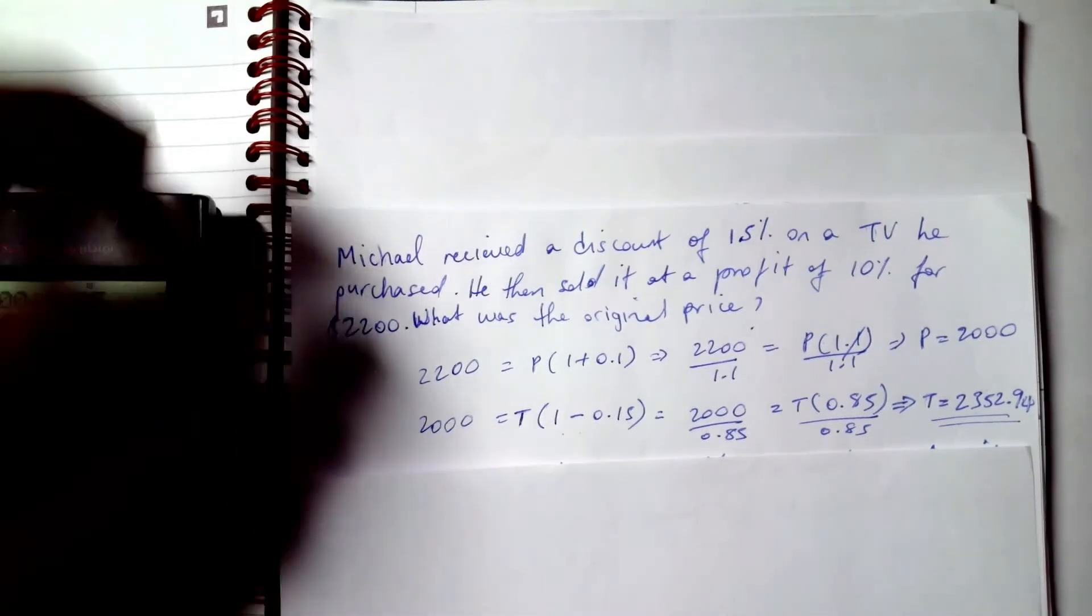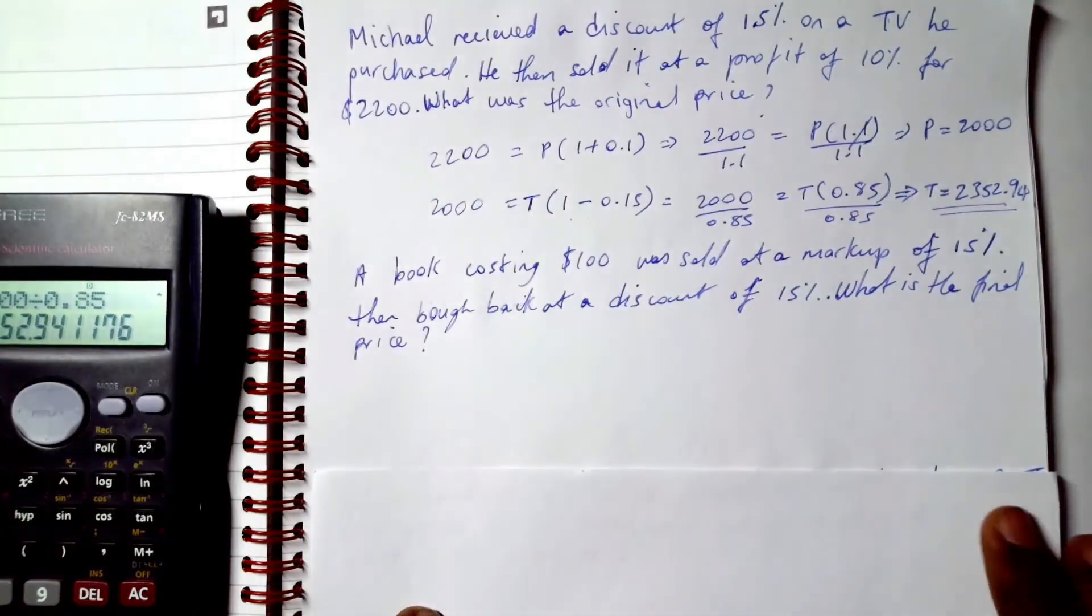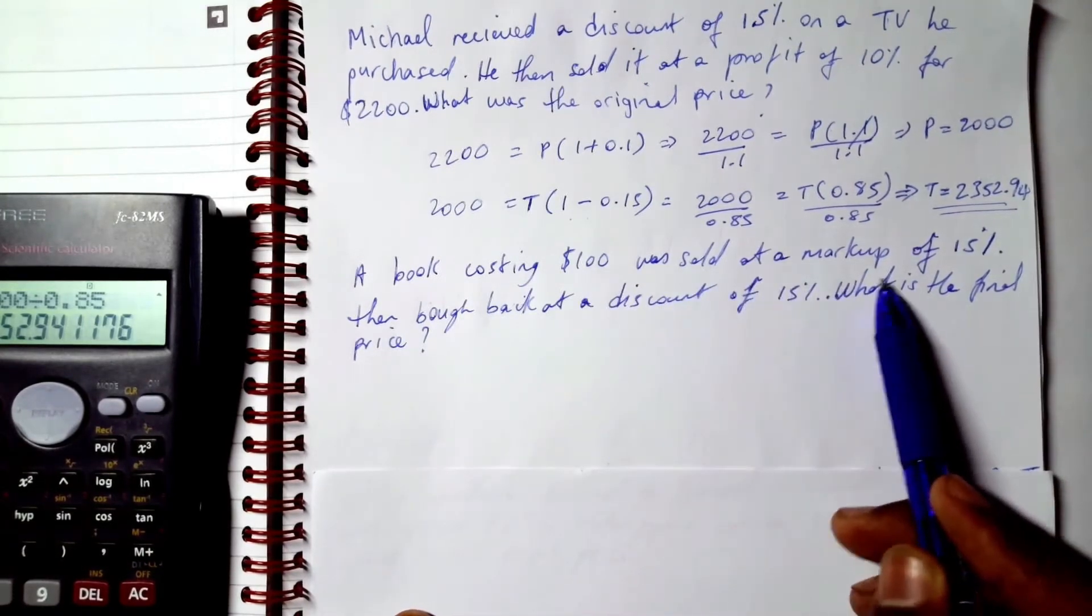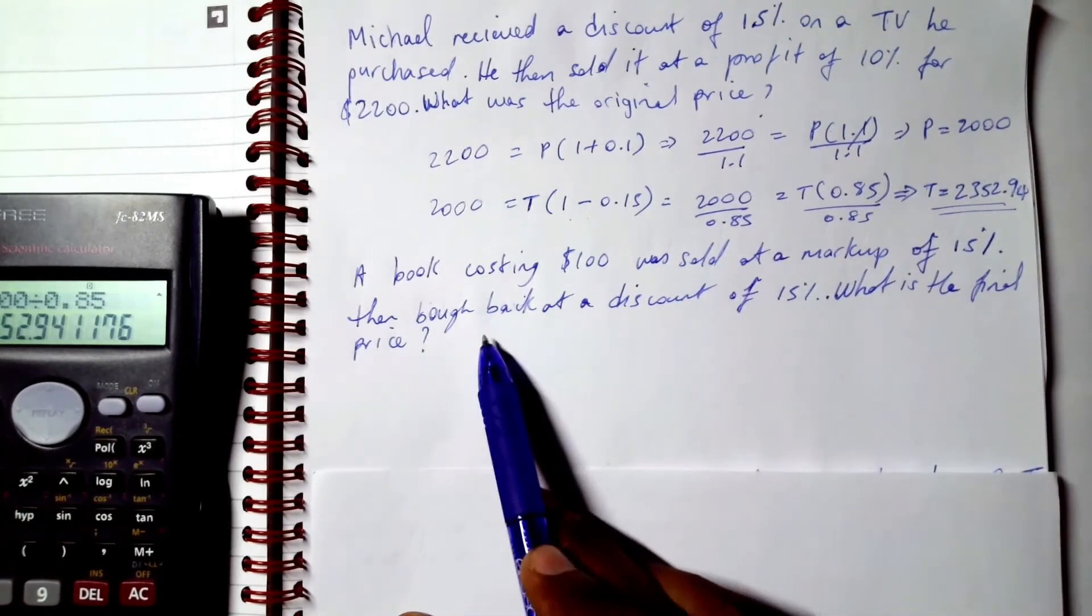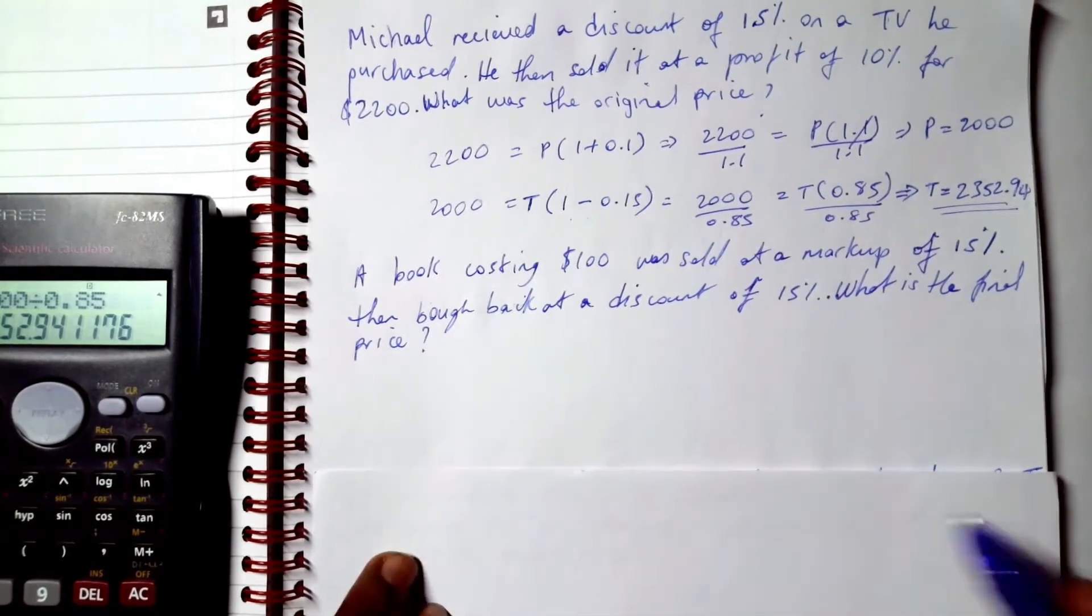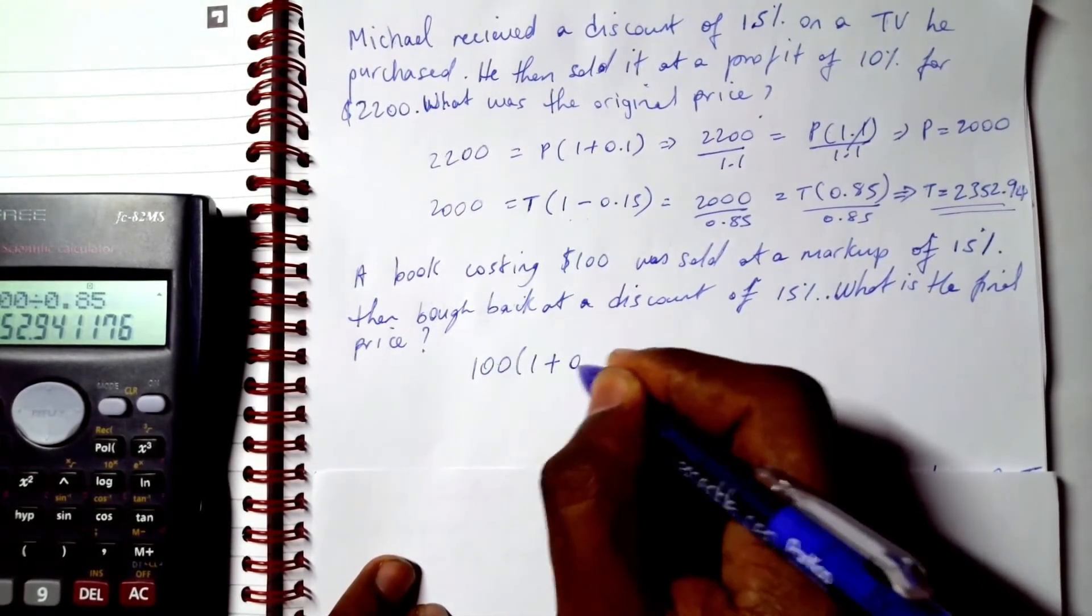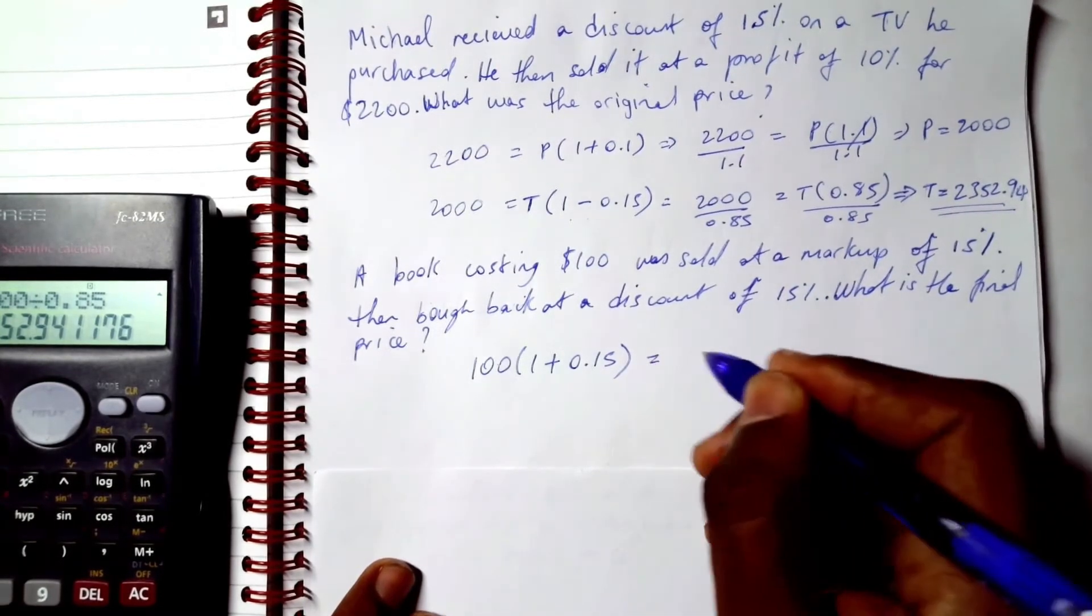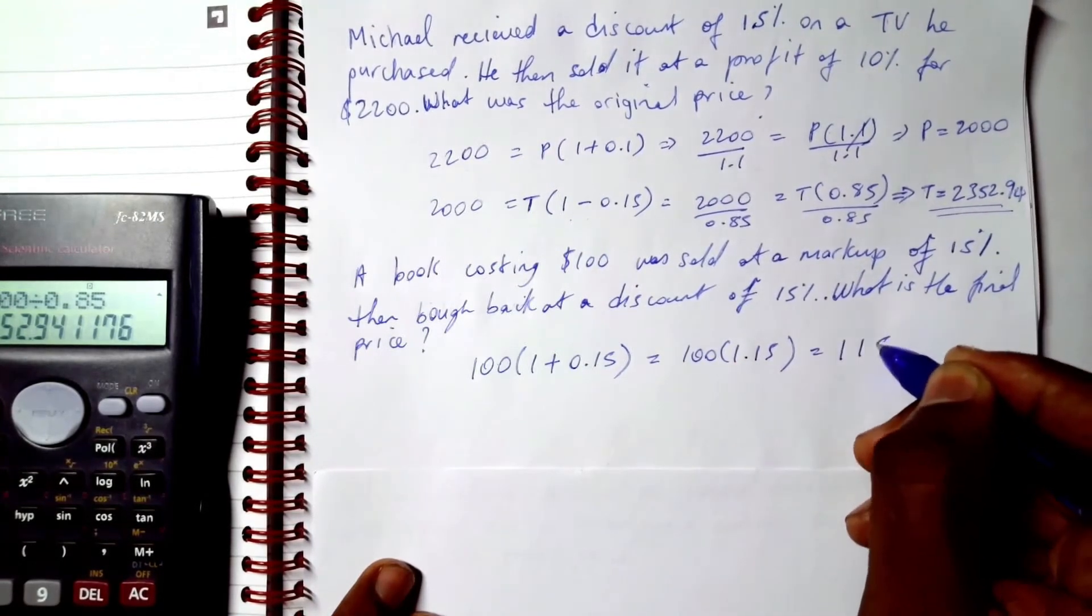Moving on to the next example. A book costing $100 was sold at a markup of 15%. That's a profit of 15%, then bought back at a discount of 15%. What is the final price? We know that 100 was marked up by 1 + 0.15. This equals 100 × 1.15, which equals $115.